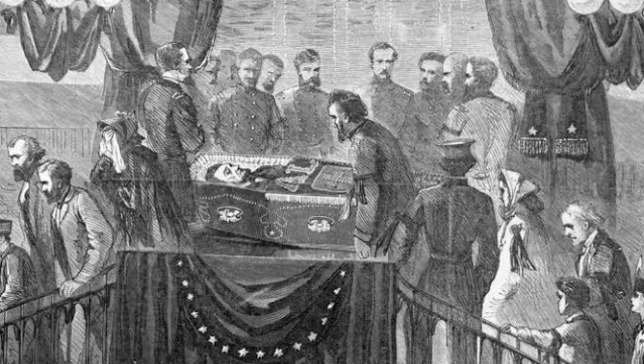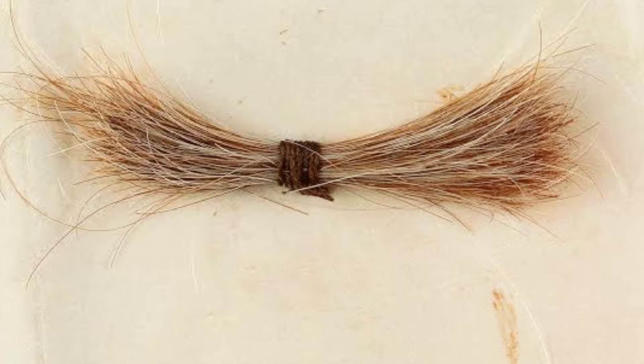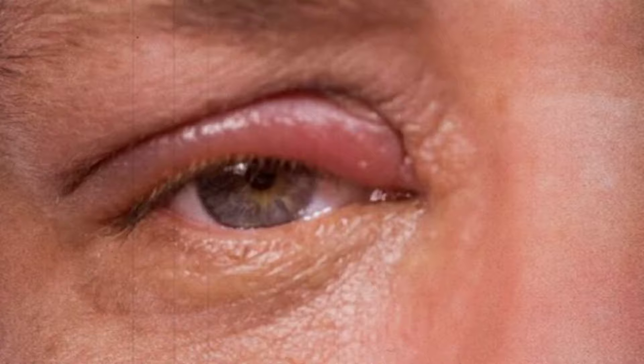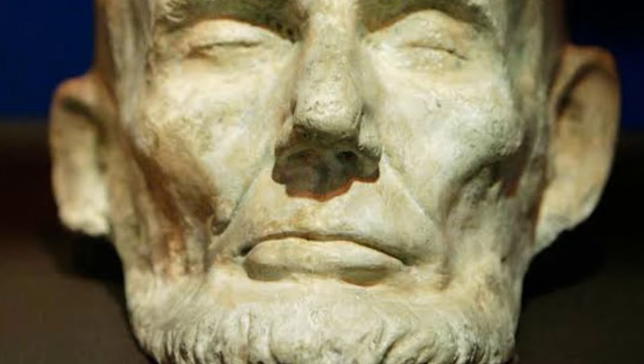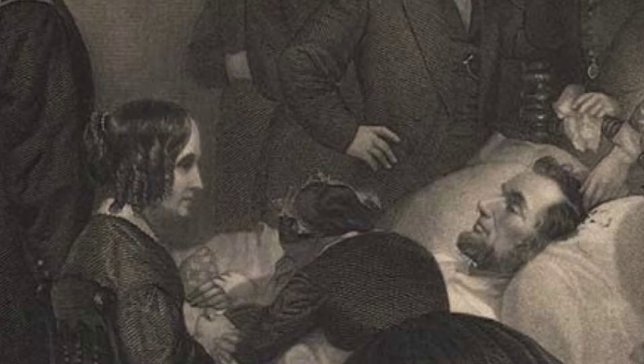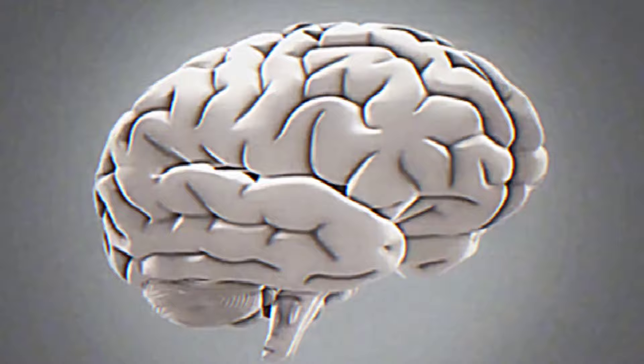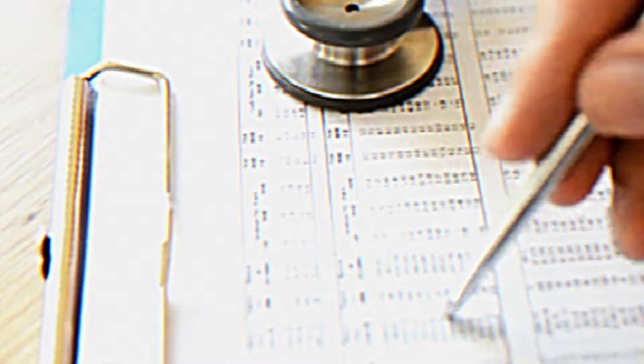Lincoln's body was embalmed for public display. A lock of his hair was removed, his eyes were discolored and somewhat swollen from blood accumulation, and his brain was normal but for the damaged areas. It was reported that Lincoln's brain appeared larger than average, leading some to speculate about whether he had a unique neurological condition. However, modern medical experts believe this may have been due to post-mortem swelling, rather than an indication of any underlying medical condition.